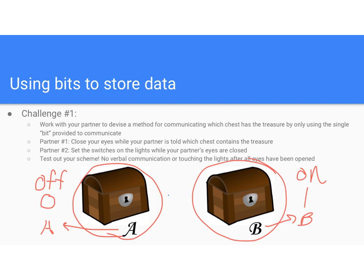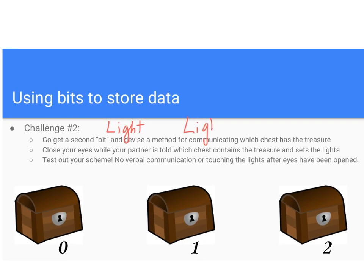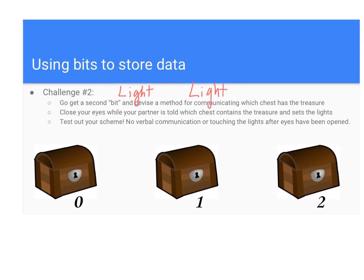Let's step it up a notch — now let's say there are three treasure chests and I give you two LED lights. You have one LED light that can be switched on or off, and another LED light that can also be switched on or off. Your job would still be to communicate to your partner where the treasure was — one person closes their eyes, I tell you which chest has the treasure, and you communicate it using those LED lights.